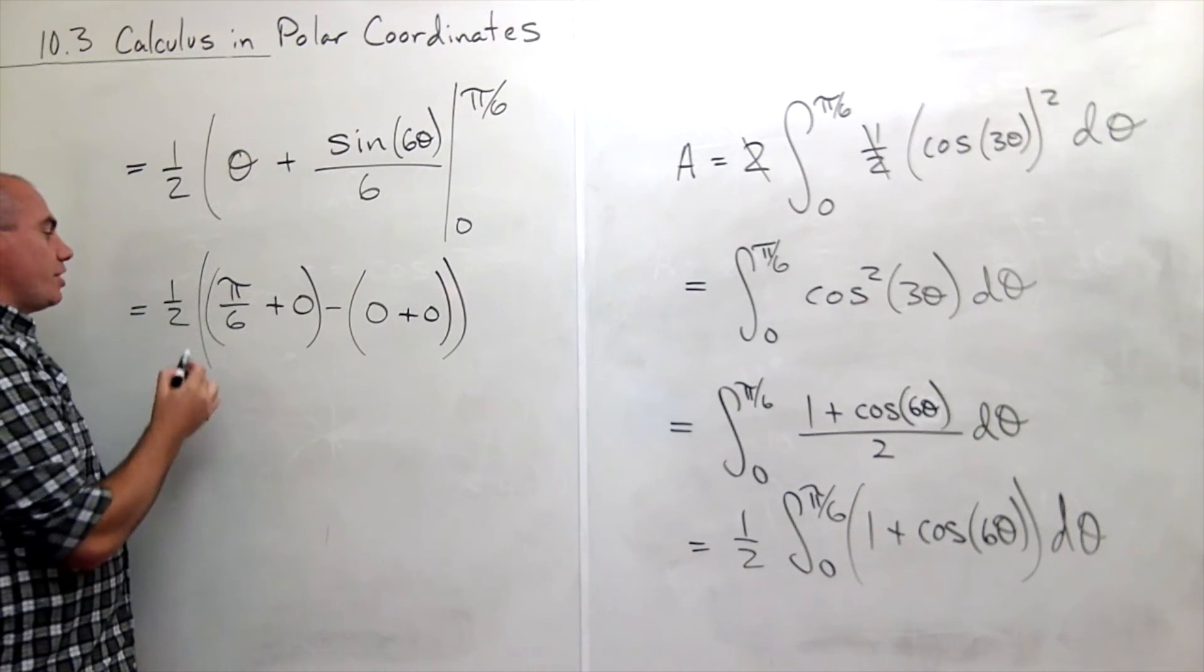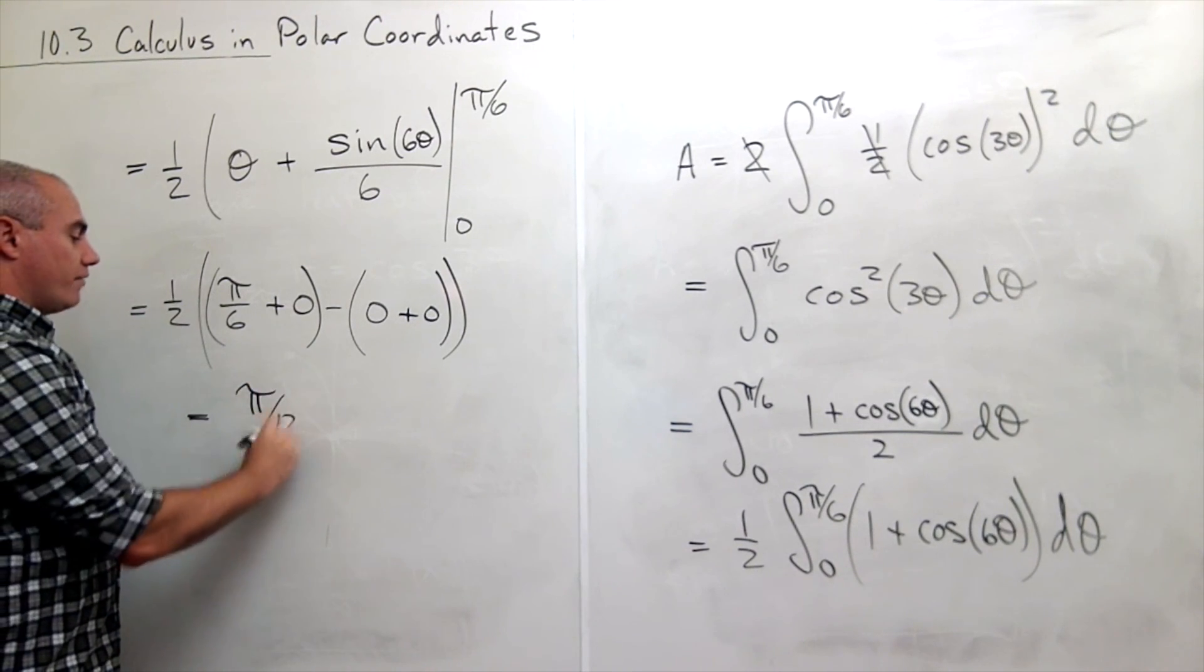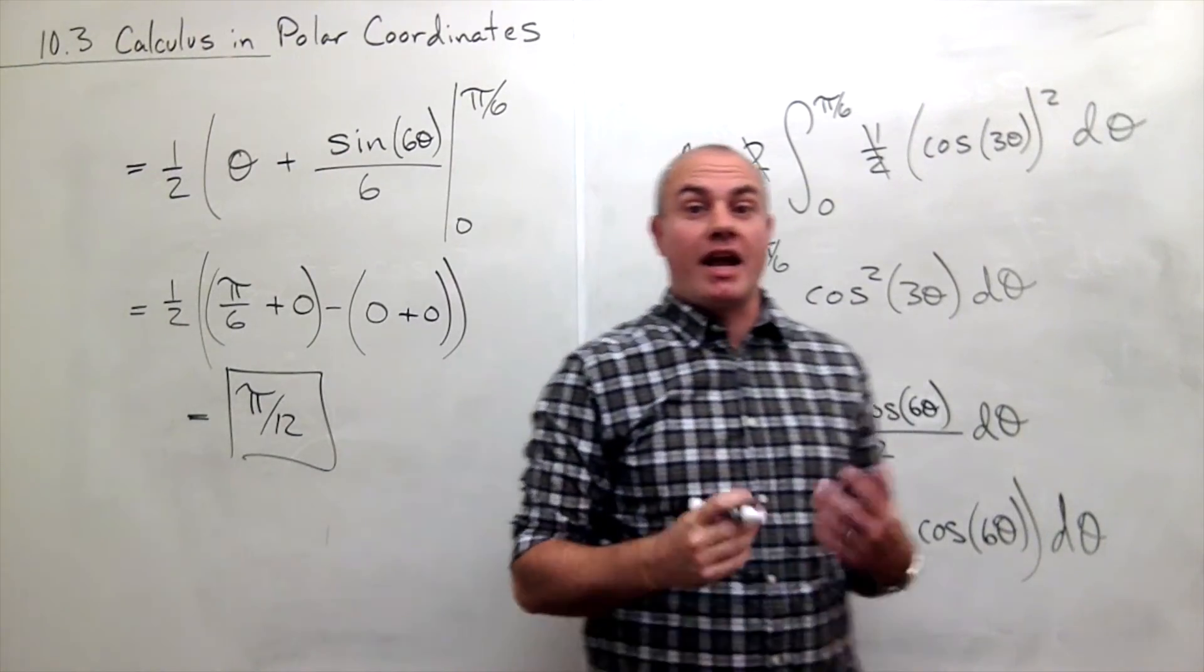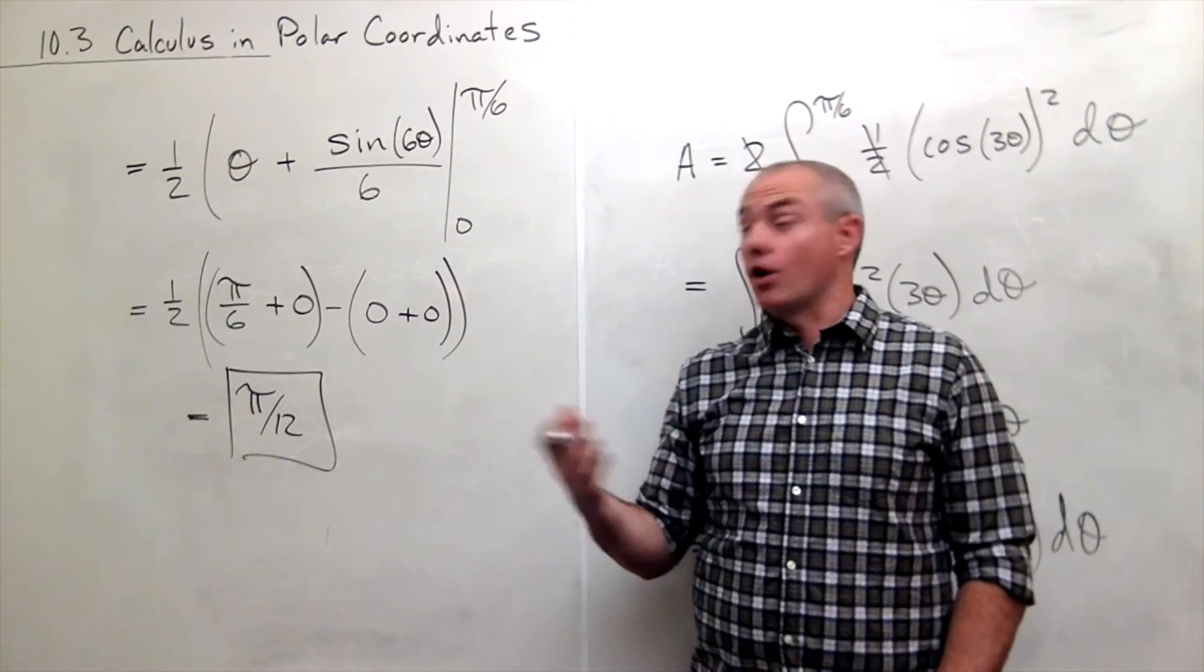So that's plugging it in. All of these are zero so I just get a half times pi over six which is pi over twelve. And so pi over twelve would be the area inside one leaf of that three leafed rose.